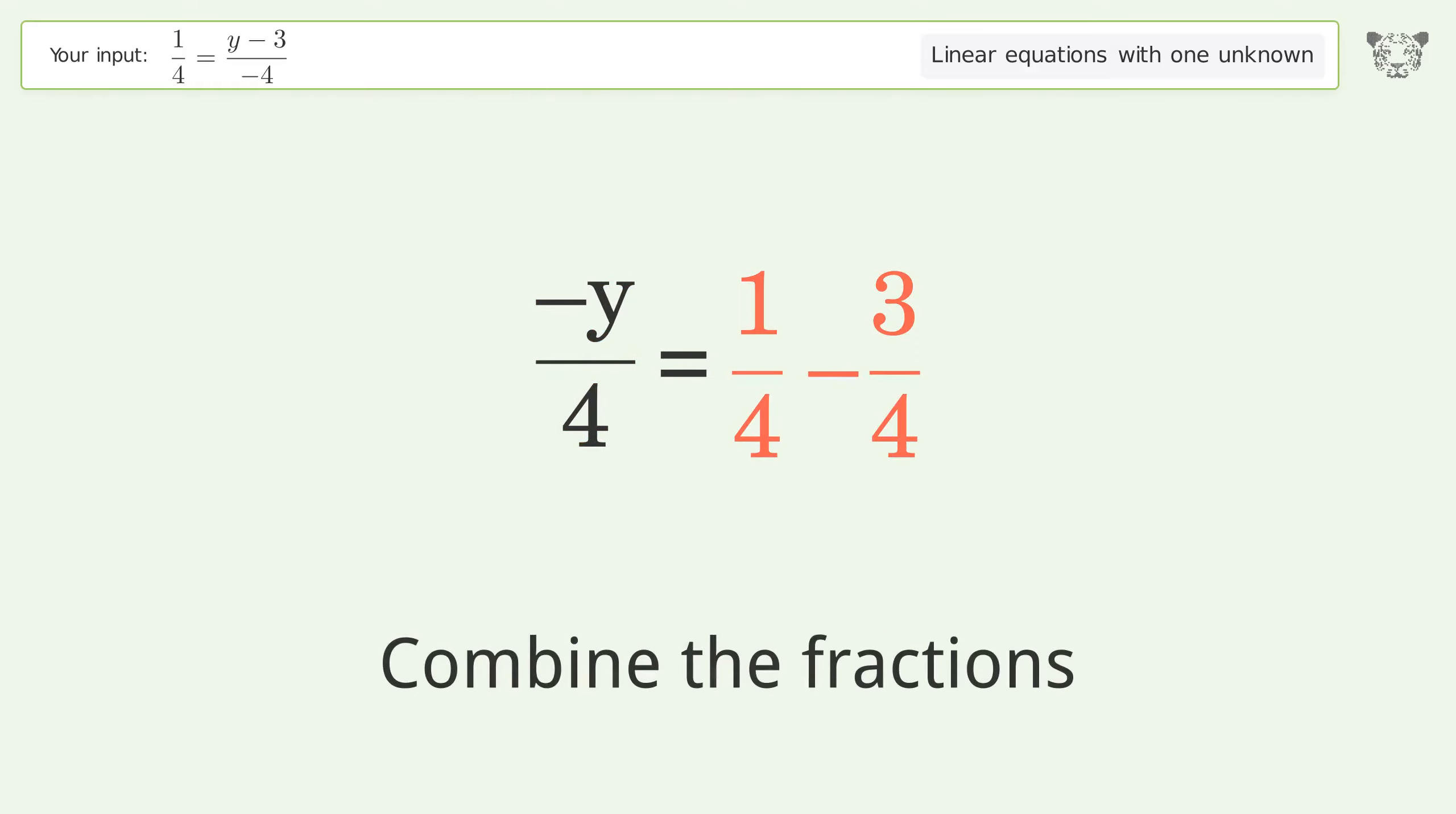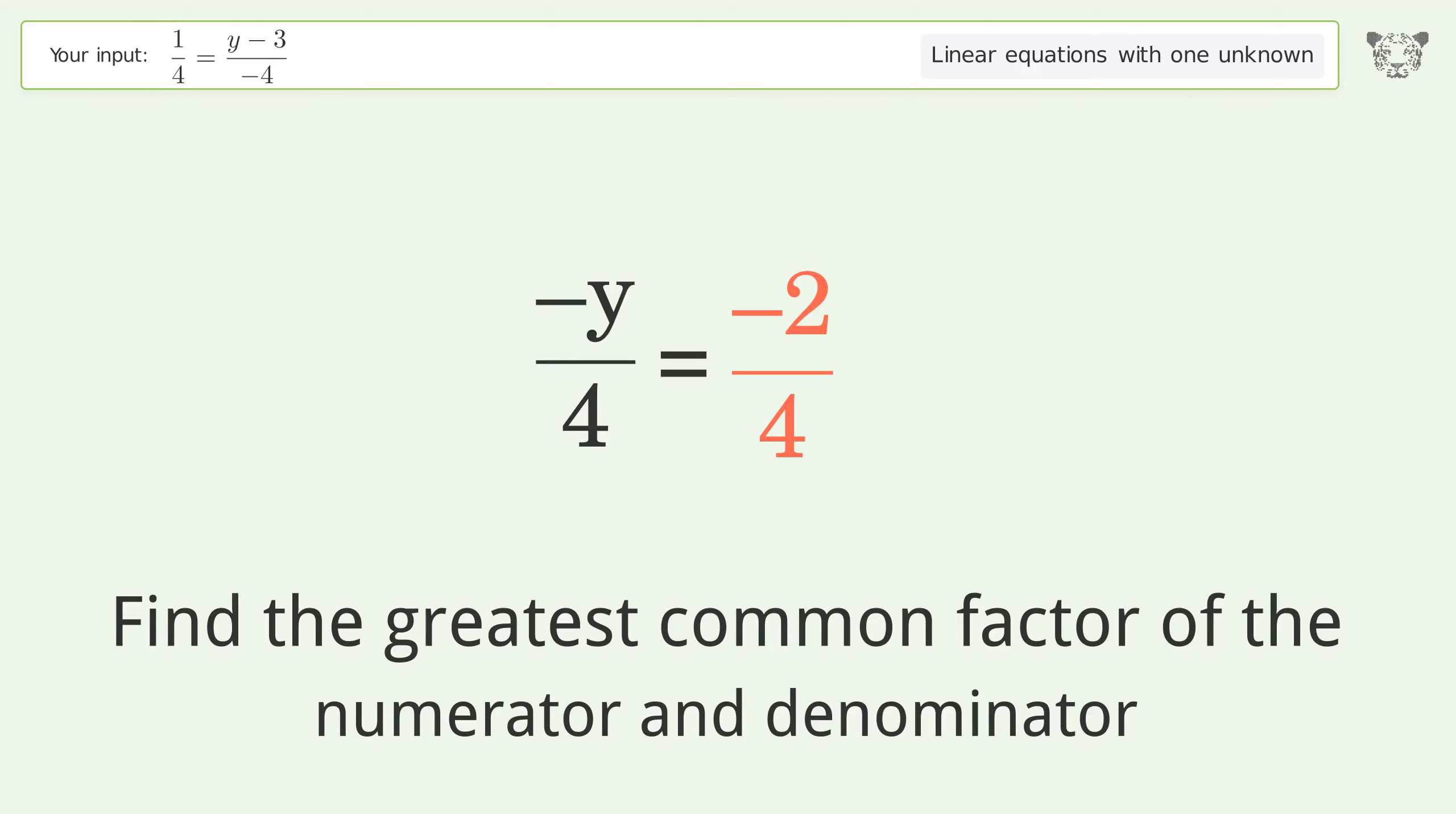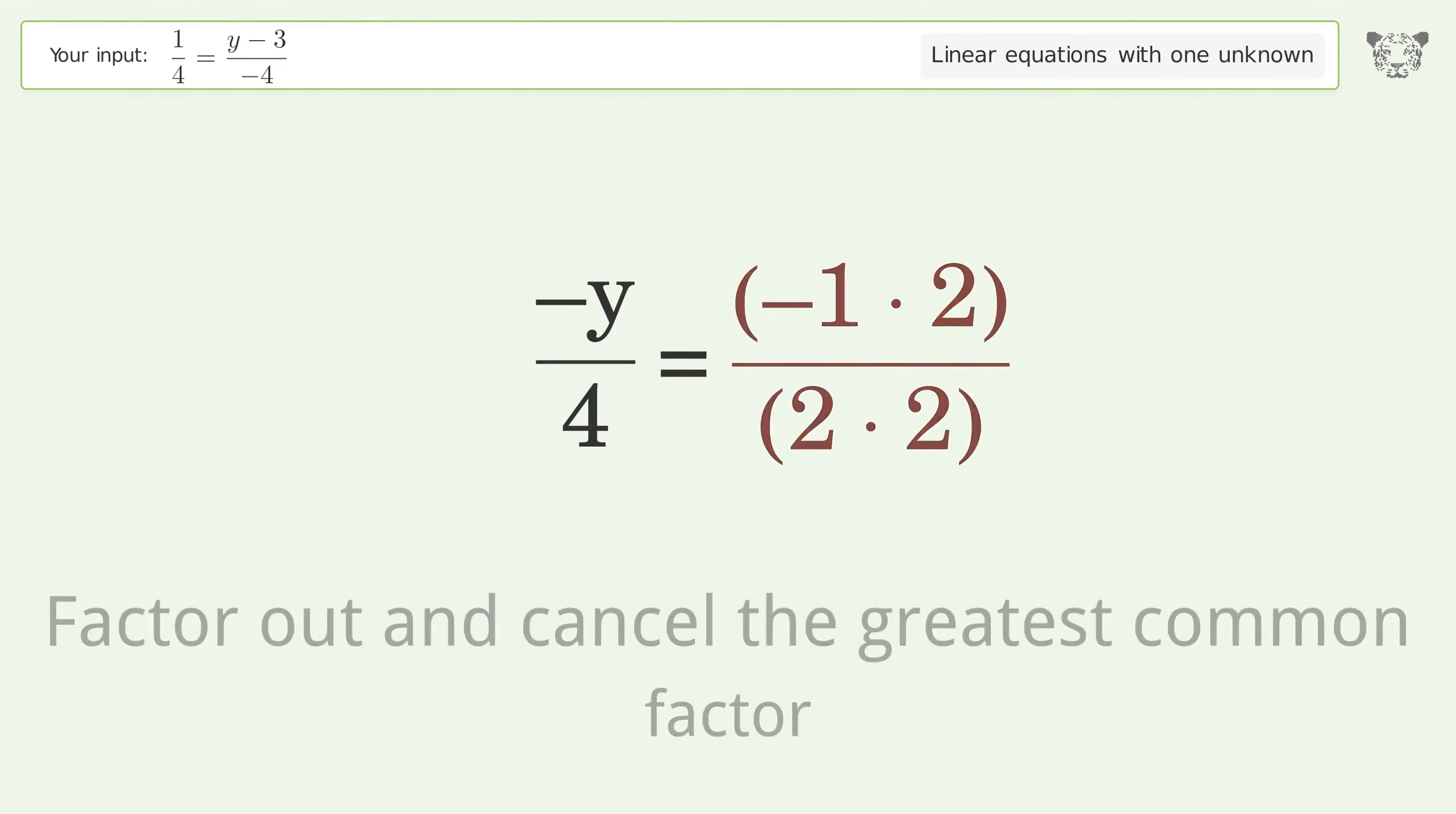Combine the fractions. Combine the numerators. Find the greatest common factor of the numerator and denominator. Factor out and cancel the greatest common factor.